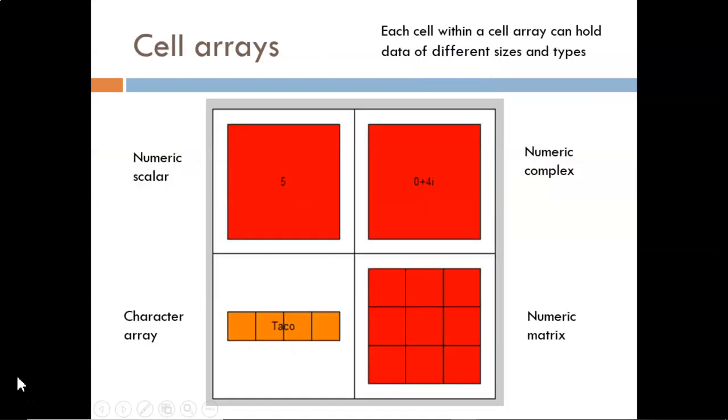Here is one example of a cell array defined using MATLAB. There are two rows and two columns of cells. The first cell simply holds a numeric scalar with the value 5. The second cell holds a character array, the word taco. The third cell holds a complex number, 4i. And the last cell holds a 3x3 numeric matrix. Each index within this matrix has a specific value. The values are just not shown on this chart.